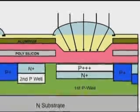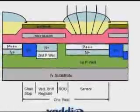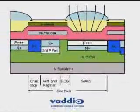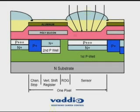On this slide you also see that on the left you have the vertical register, which is where the photons — converted to electrons — are then transferred to the vertical register to be clocked out later. The vertical register does not pick up light, but it transfers electric charges throughout the CCD.